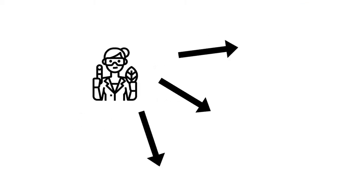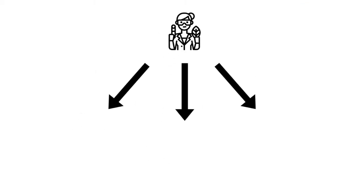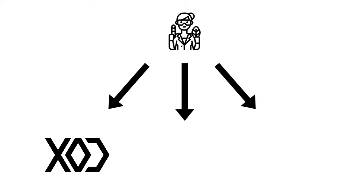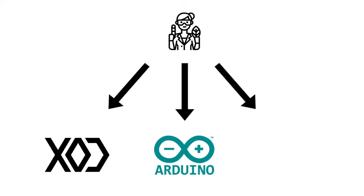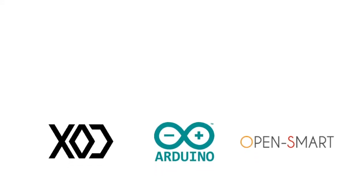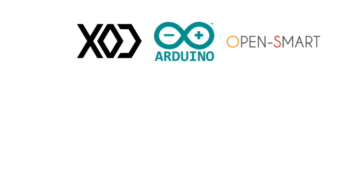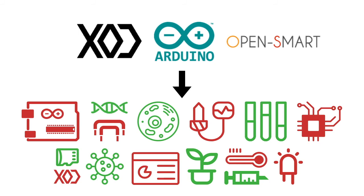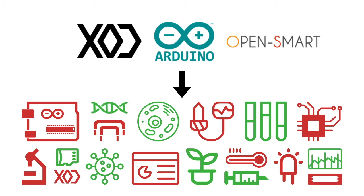The course uses the free visual programming software Zod and the hardware is based on a low-cost Arduino microcontroller and OpenSmart components. This means that once you have the skills to start working with these systems, the possibilities for low-cost open-source custom instrumentation are endless.